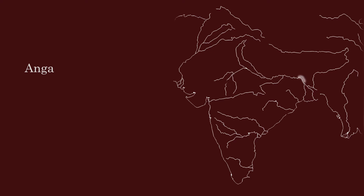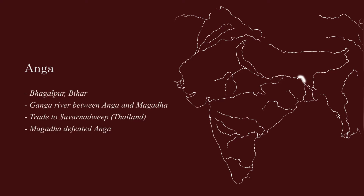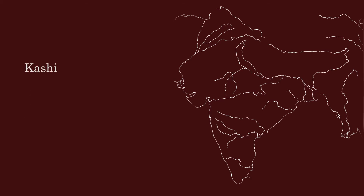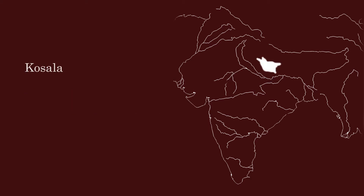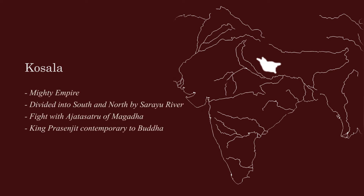Anga was located on the banks of the river Ganga near the present-day location of Bhagalpur, Bihar. There was a natural boundary provided by the river Champa between Anga and the rivalling Mahajanapada of Magad. Kashi was a wealthy and prosperous republic of ancient India. The capital, Varanasi, was bounded by two rivers — Varuna in the north and Asi in the south. Kosal was a mighty empire which was divided into two parts by the ancient river Sharaya.